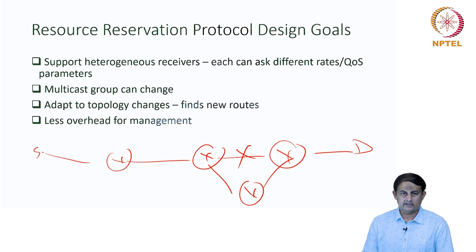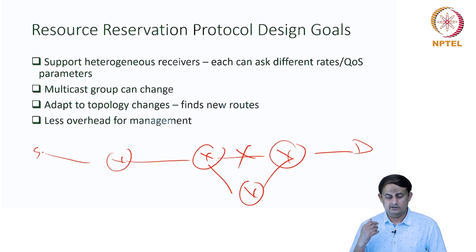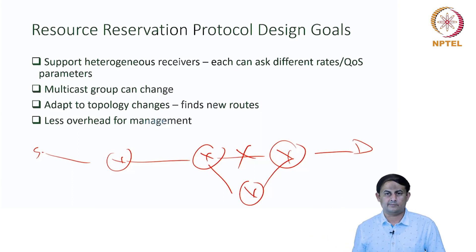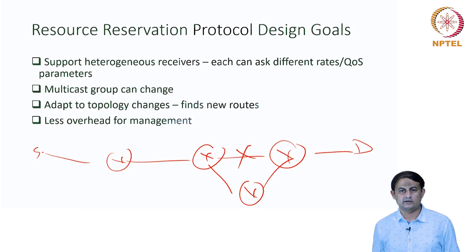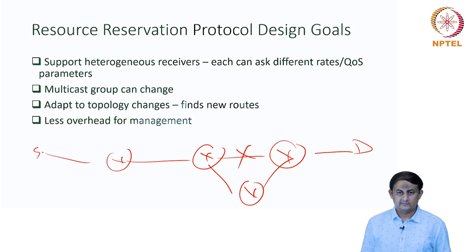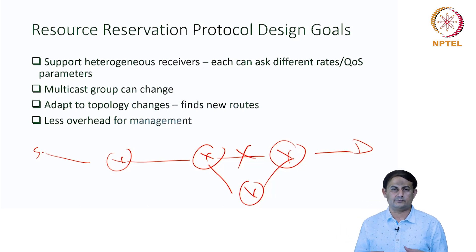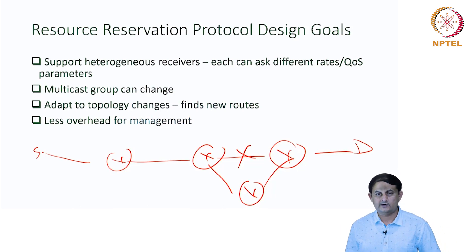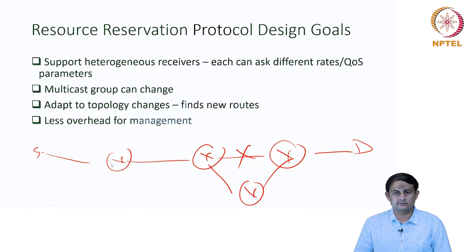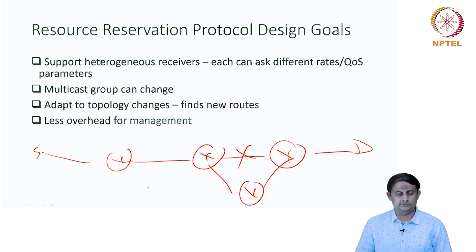At any point, if the topology of the network changes, RSVP can adapt to those changes and still maintain the ongoing conversation. It has also been designed to put less overhead on the routers through a concept called soft state, which limits the overhead on the router. These are the salient features of RSVP.